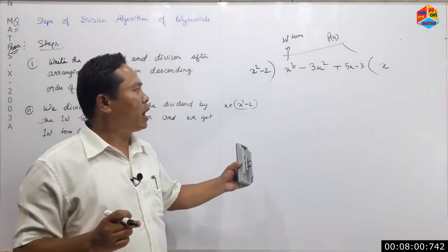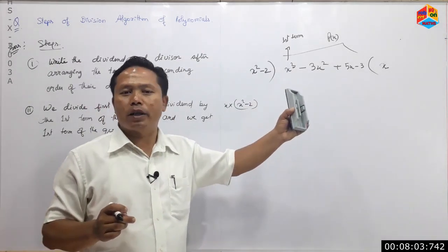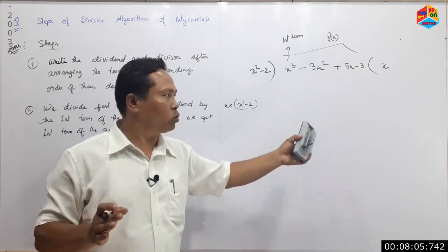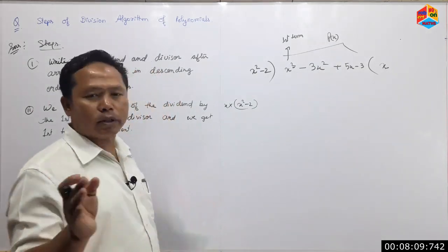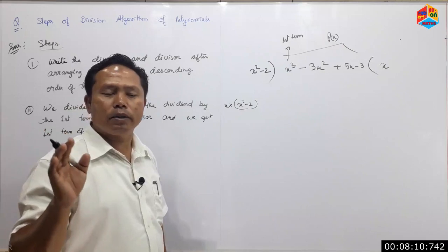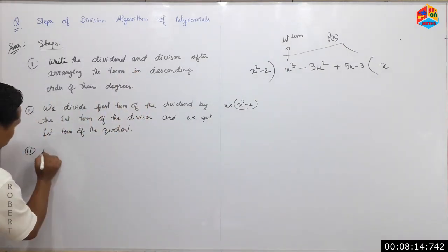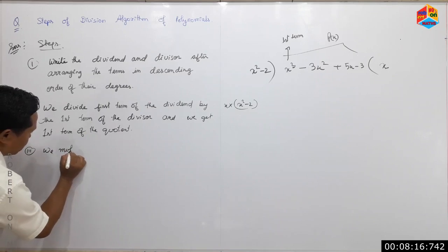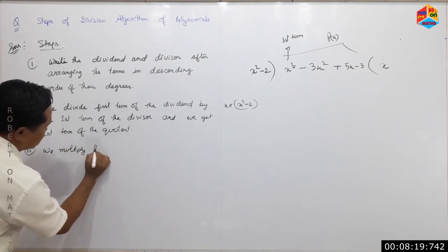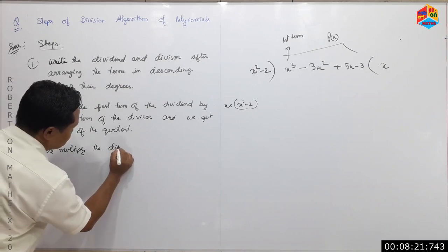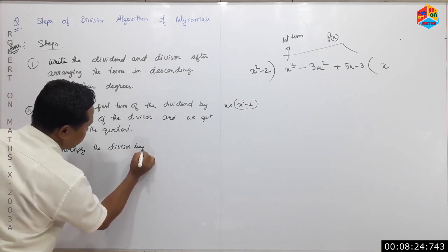We multiply the divisor by the first term of the quotient to obtain the product.